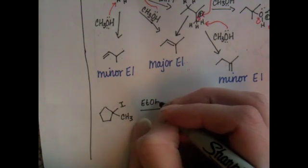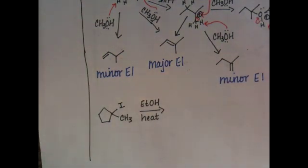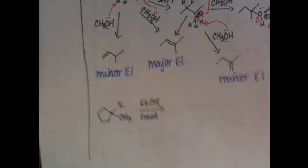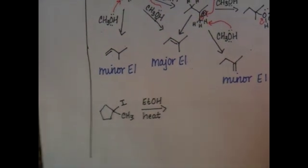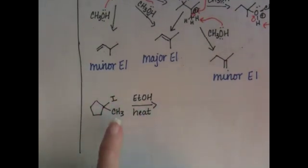Remember, yesterday I talked about how ETOH is the abbreviation for ethanol, with ET being the abbreviation for ethyl, CH2CH3. This is a weak nucleophile. This is an alkyl halide.